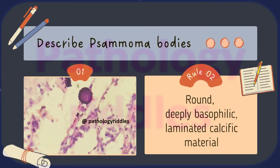Describe a psammoma body. A psammoma body is basically round basophilic laminated calcific material, like you are seeing in this picture.